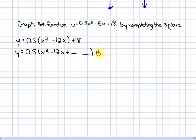Our next step is to create a perfect square trinomial by adding and subtracting the same value inside the brackets. In that case, that value is going to be half of negative 12 squared. Half of negative 12 is negative 6. Negative 6 squared is 36.